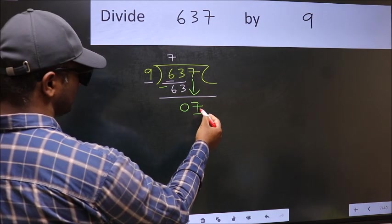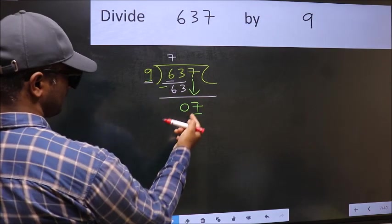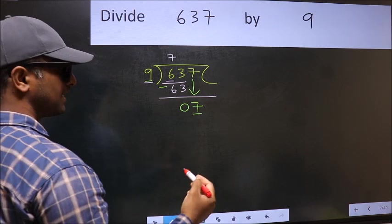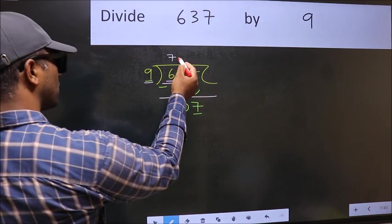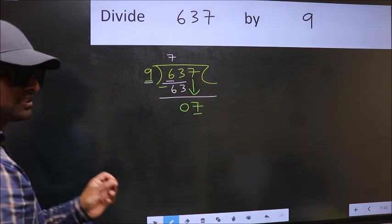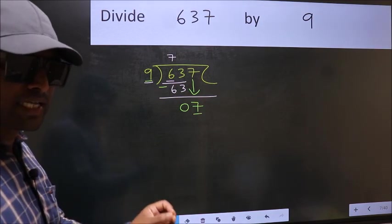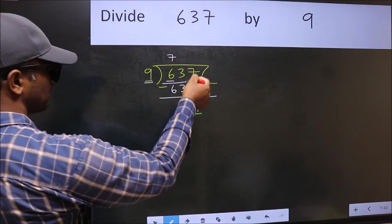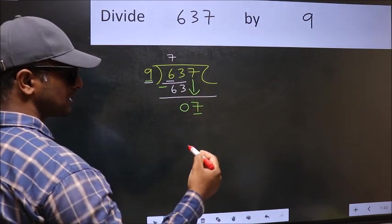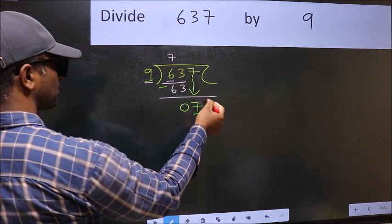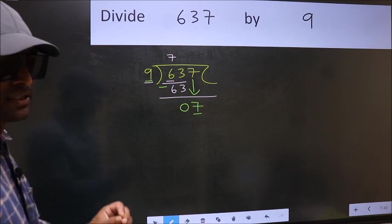Here we have 7, and here 9. 7 is smaller than 9. So what many do is they directly put a decimal point and take 0. Which is wrong. Why is it wrong? Because you just brought this number down, and in the same step, you want to put a decimal point and take 0. Which is wrong.